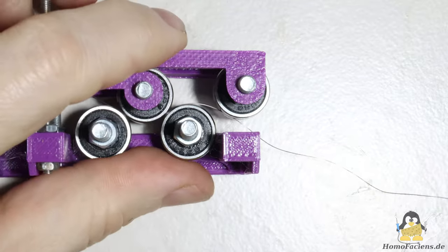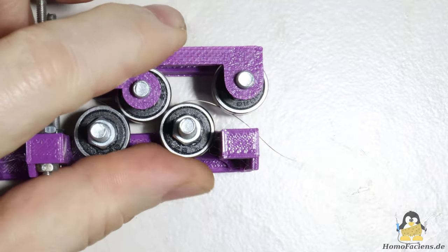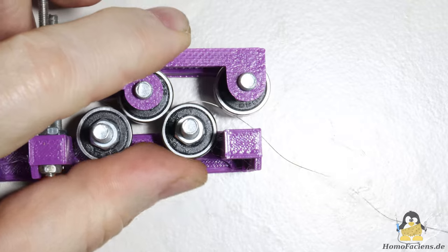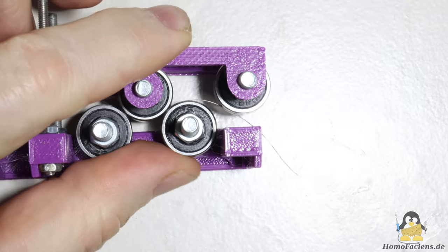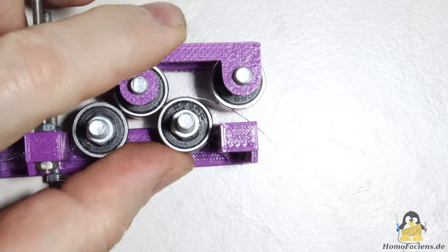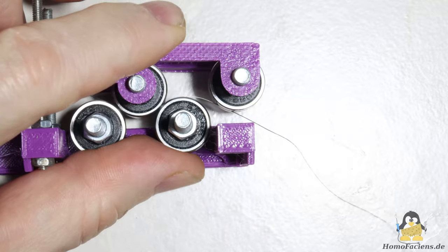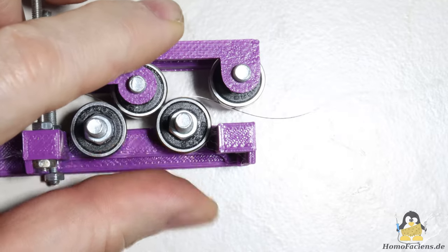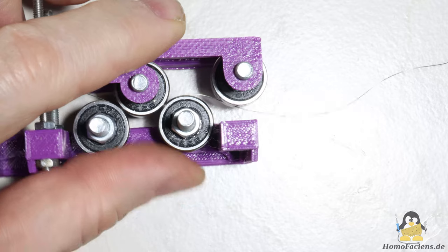Such wire straighteners typically work by pulling the wire through the mechanism. If the rollers themselves are converted into drives, the wire rotates in the mechanism due to the lack of wire tension, creating the corkscrew shape.